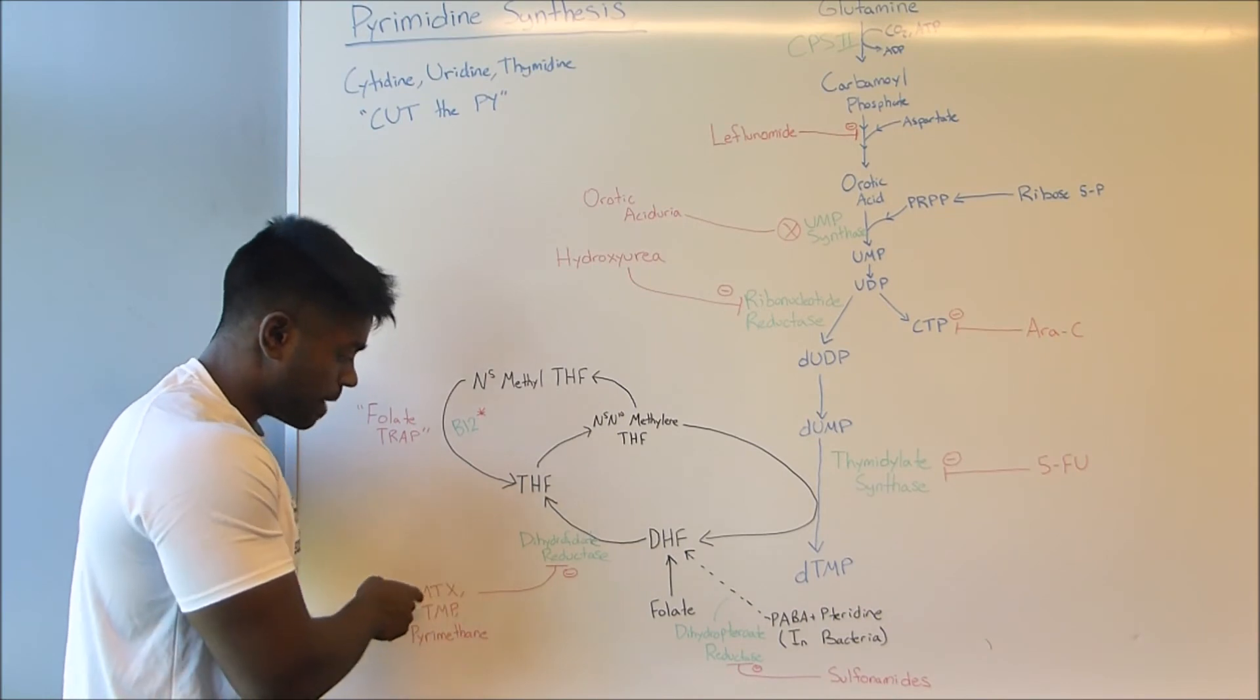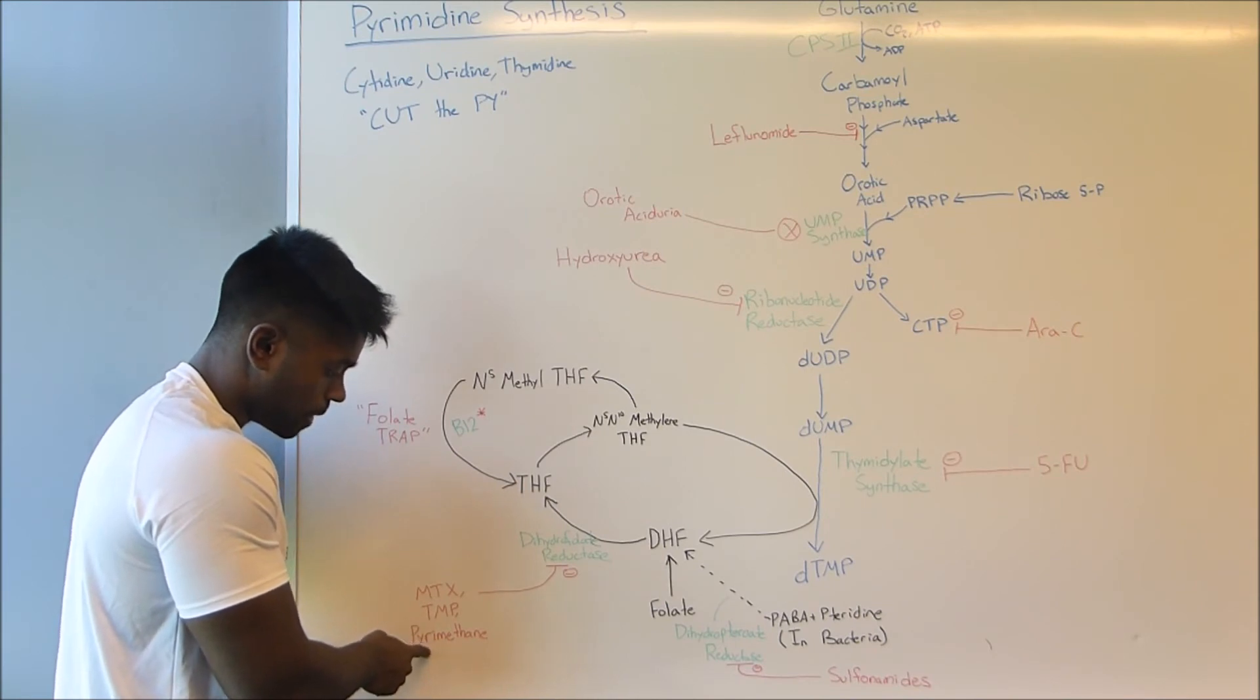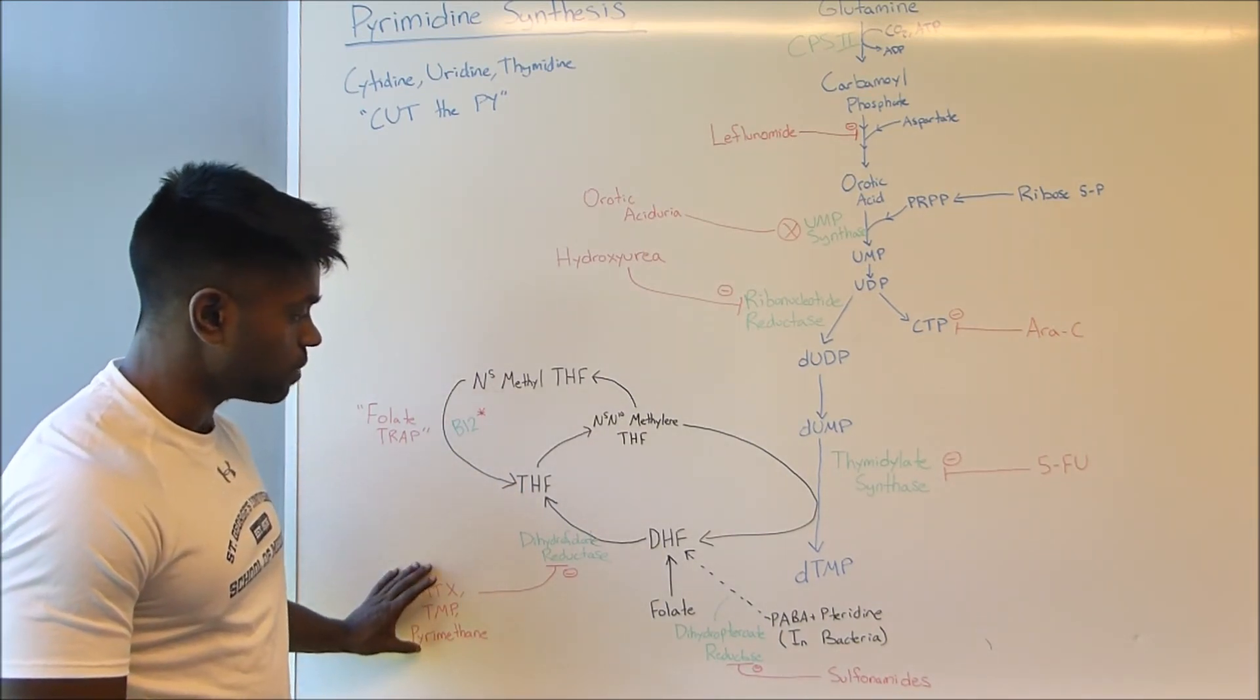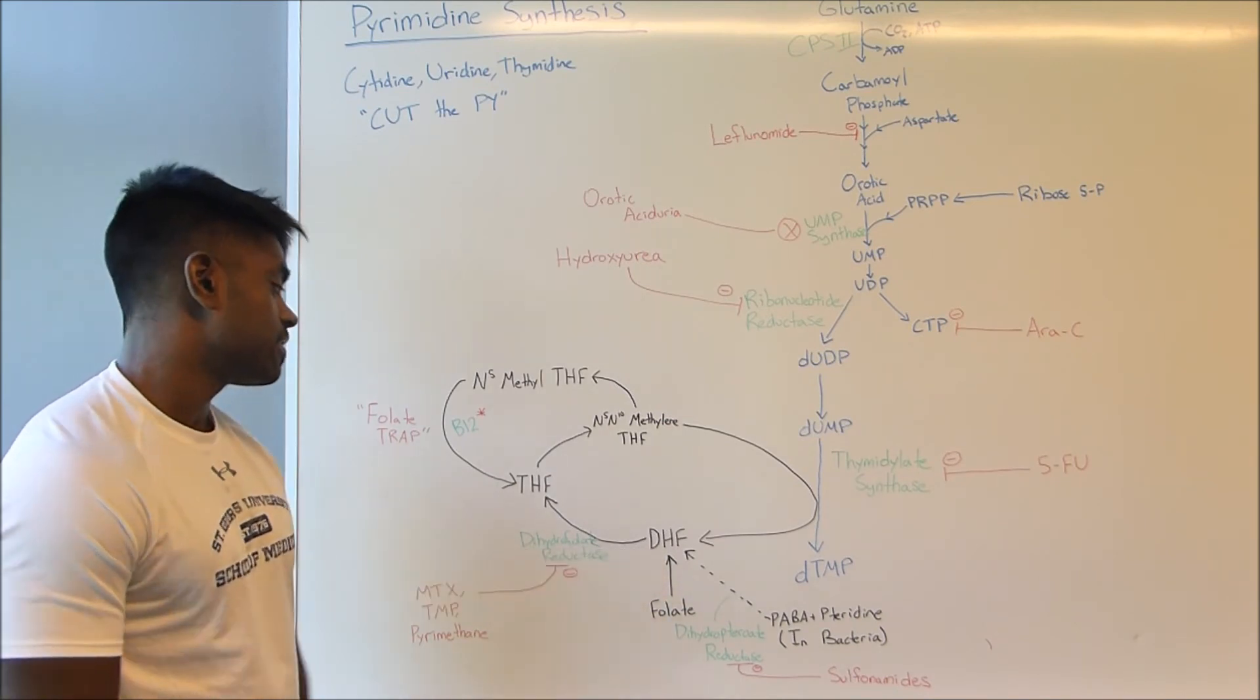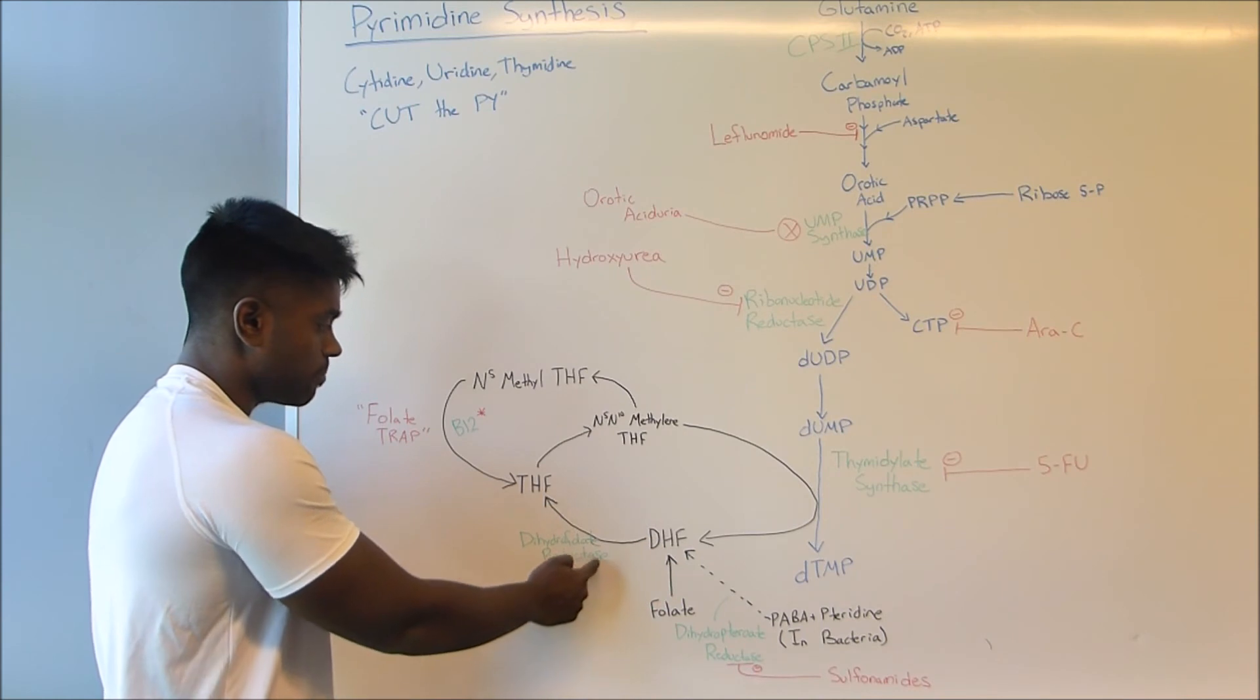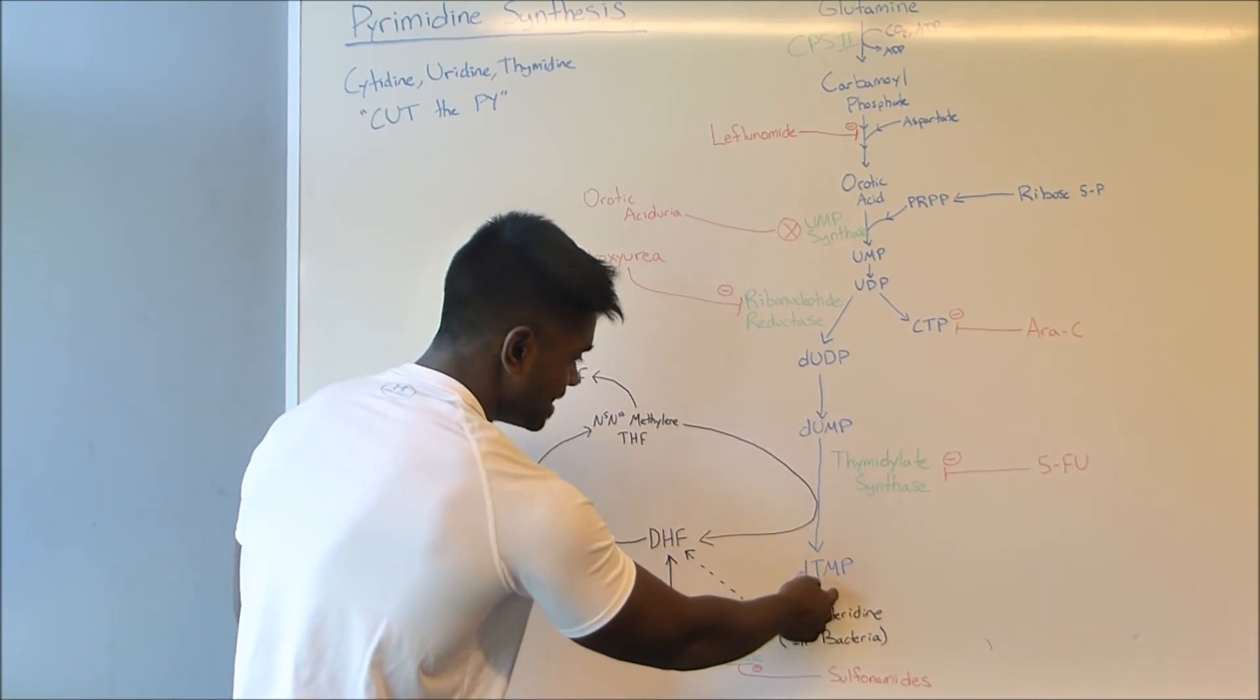Next right here we're going to have methotrexate which is going to be used in humans, and then TMP and pyrimethamine which is going to be used in bacteria. So this molecule, guess what it's going to do? You got it. It's going to be mimicking DHF. So you can see that when this is going to mimic DHF it's going to be binding to this enzyme and therefore inhibiting it. Therefore once you follow the pathway it's going to cause a decrease in dTMP.